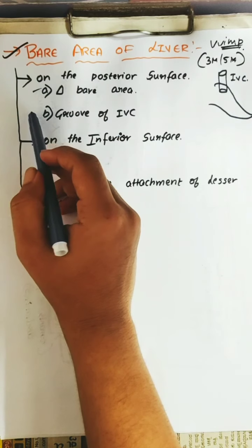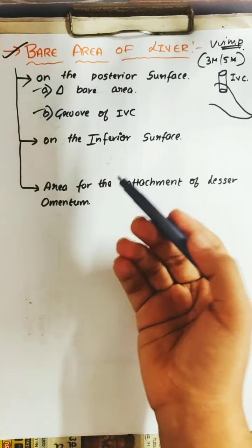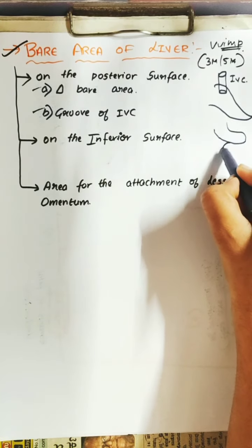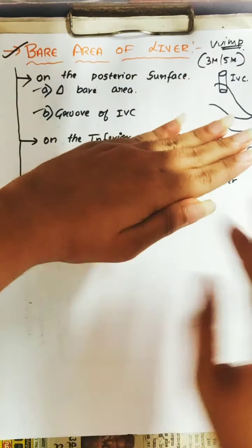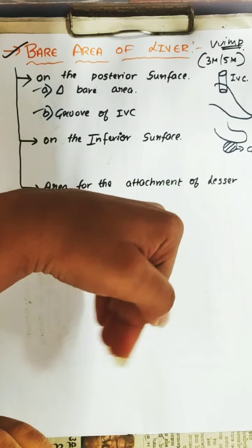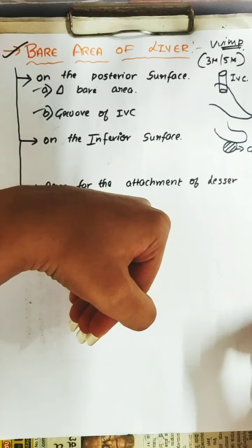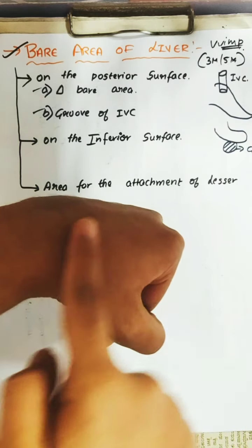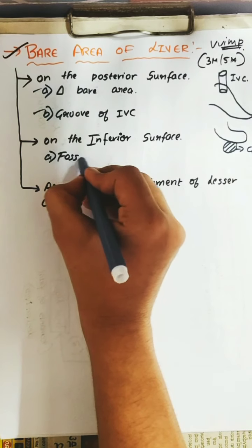So the first one is the triangular bare area, the second one is the groove for the inferior vena cava. On the inferior surface, there is porta hepatis. You can also see the attachment of the gallbladder. This is the porta hepatis — a J-shaped structure. If there is removal of the gallbladder, there is a fossa here — the gallbladder fossa bare area — so this area is called the fossa for the gallbladder.